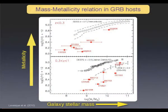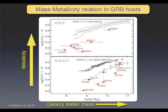The mass-metallicity relation tells you that the most massive galaxies are also more metal-rich. This relation is observed in the local universe but also at higher redshift. You can study this also with GRB host galaxies. It's not particularly easy because the sample is not very large, but it was done recently by Emily Levesque et al. 2010. They observed that the relation exists at low and high redshift, but it's shifted with respect to normal galaxies — it tells you that galaxies with the same stellar mass are more metal-poor than normal galaxies.